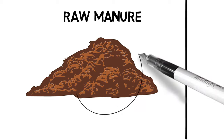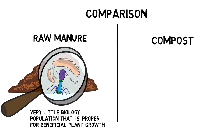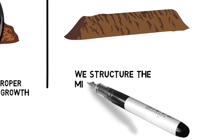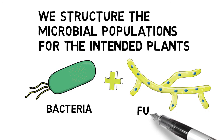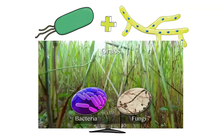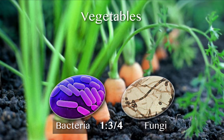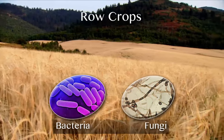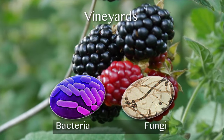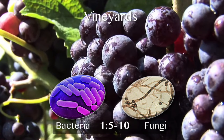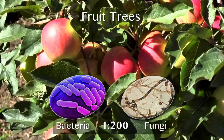In raw manure there is very little biology population that is proper for beneficial plant growth. In properly composted manure, we structure our microbial populations towards the intended plants to be grown. For example, vegetables are more bacteria-dominated; grasses require approximately three times more bacteria than fungi; vegetables require approximately three-quarters of a fungi for every bacteria. Row crops require a balanced biology — one bacteria to one fungi. Woody plants and vines require five to ten fungi for every one bacteria. Fruit trees and ornamental trees require as high as 200 to 250 fungi per bacterium.